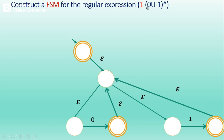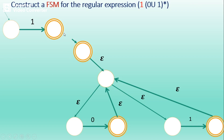Now, how to concatenate 1 with (0 union 1) star? This is like concatenating machine A with machine B. Create FSM for 1 first, then using an epsilon transition, join the accepting state of 1 to the start state of (0 union 1) star. The accepting state of 1 is then converted back to a normal state. This gives us the final FSM for 1(0 union 1) star.